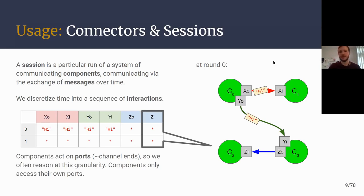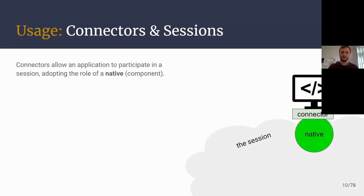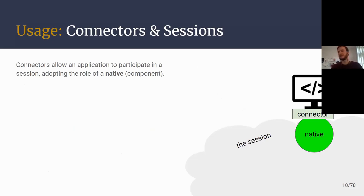For example, component C2 observes that no message is received in round zero or round one. Furthermore, ports are owned uniquely by the components — port ZI is owned by C2. Connectors allow an application written in some native language to participate in sessions by assuming the role of a component. We call this the native component, suggesting that its behavior is implemented as native machine code or something like that.